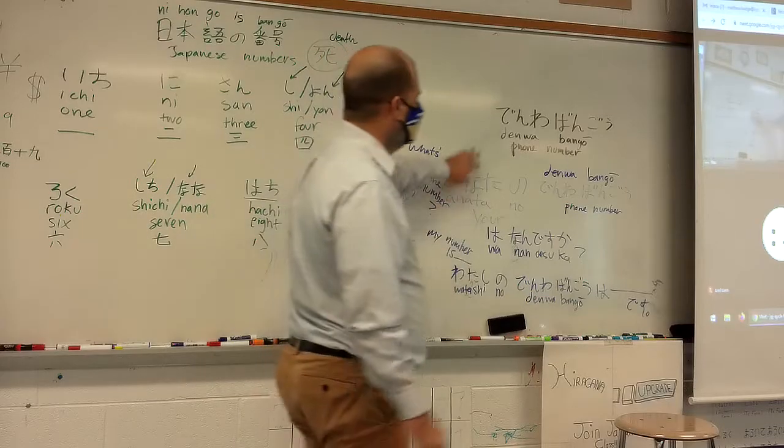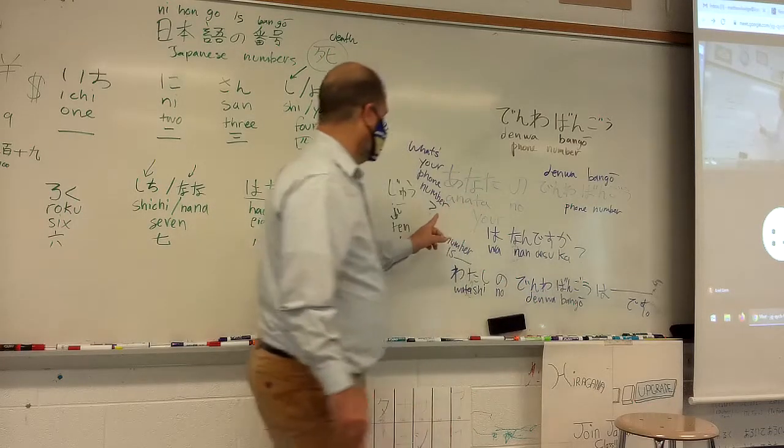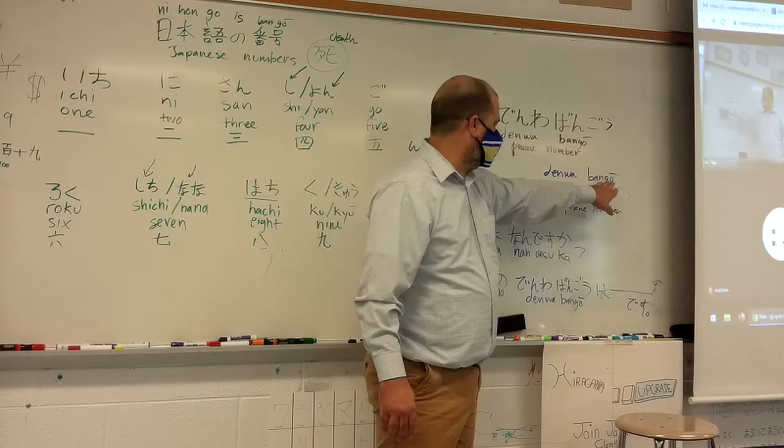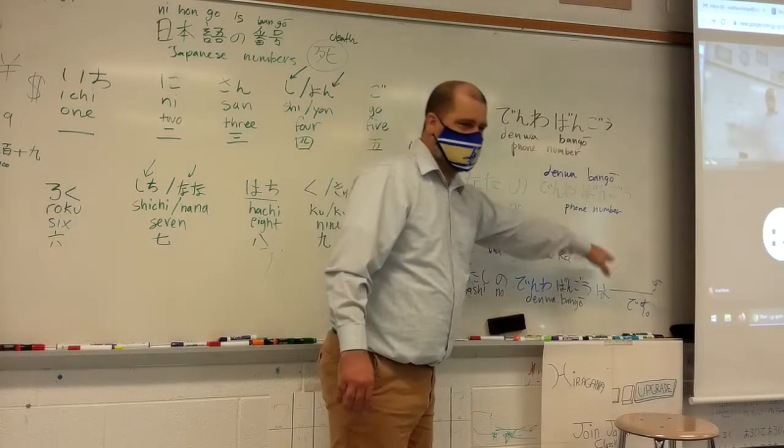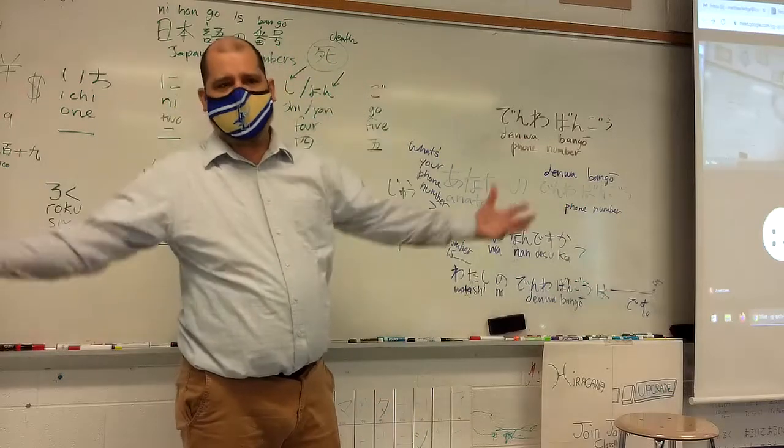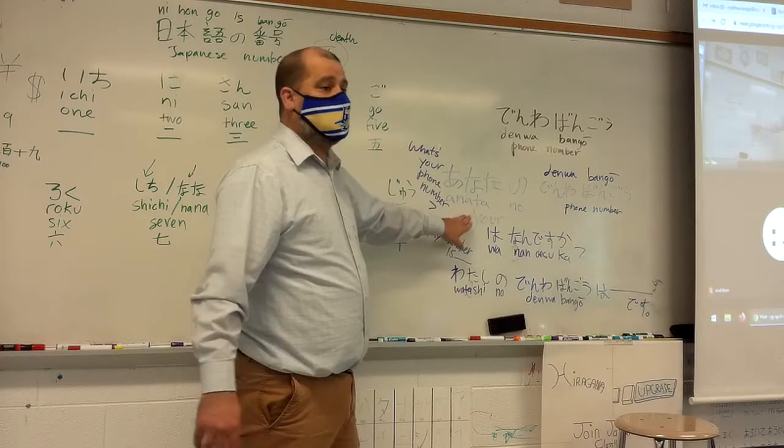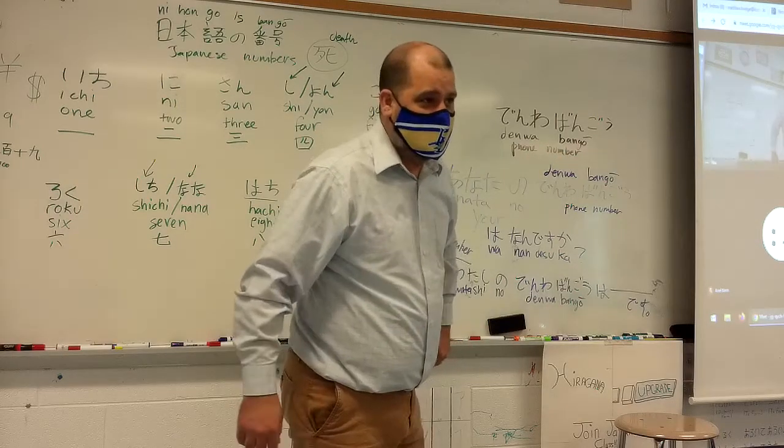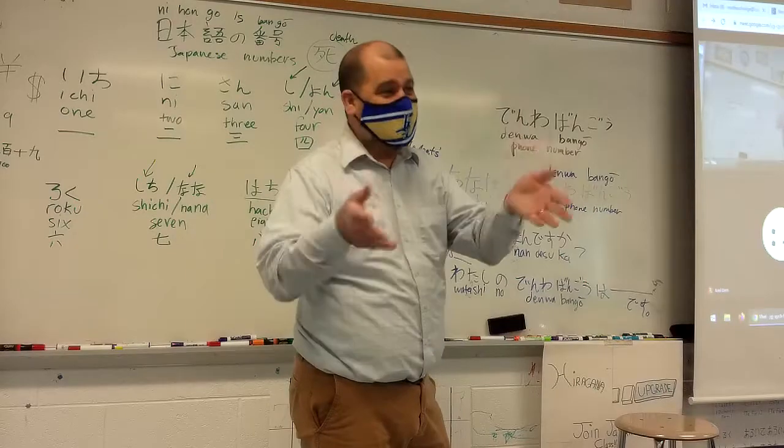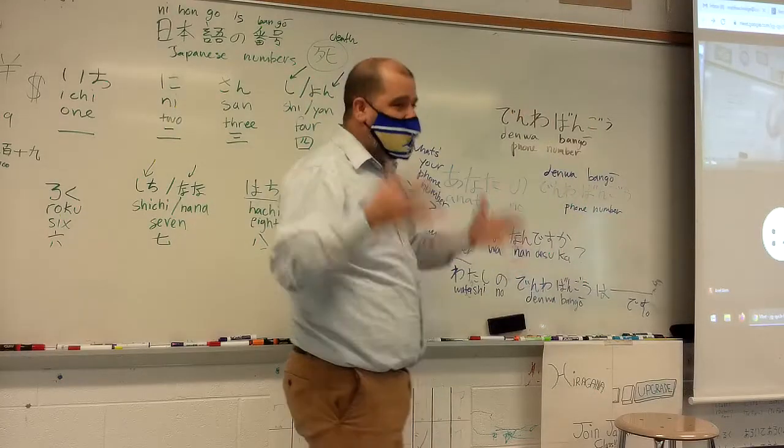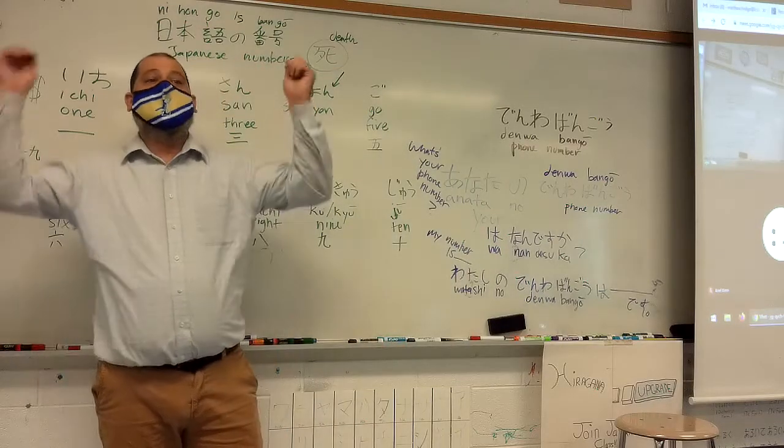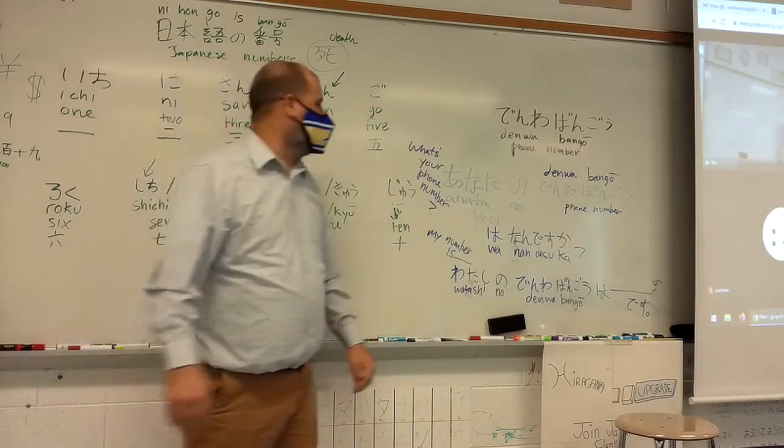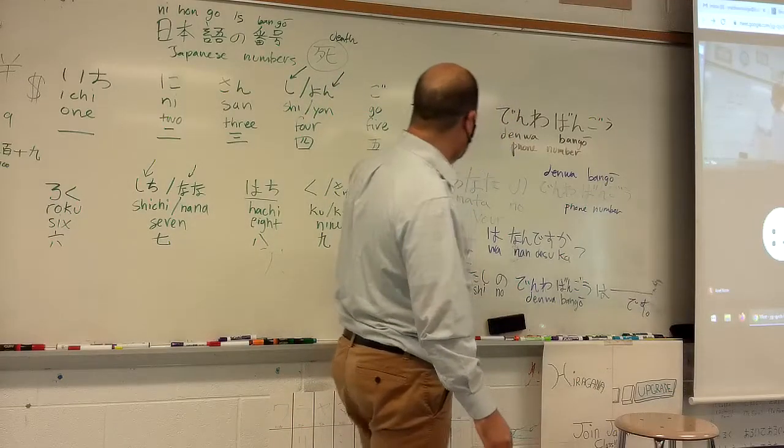So, let's say these words together really quickly. We're gonna read this. Anata no denwa bango wa nandesuka. Let's read it all together. Ready? Anata no denwa bango wa nandesuka. Say it. Anata no denwa bango wa nandesuka. Okay. Let's say it together. Ready? Hai. Hai means go ahead. Anata no denwa bango wa nandesuka. What is your phone number?